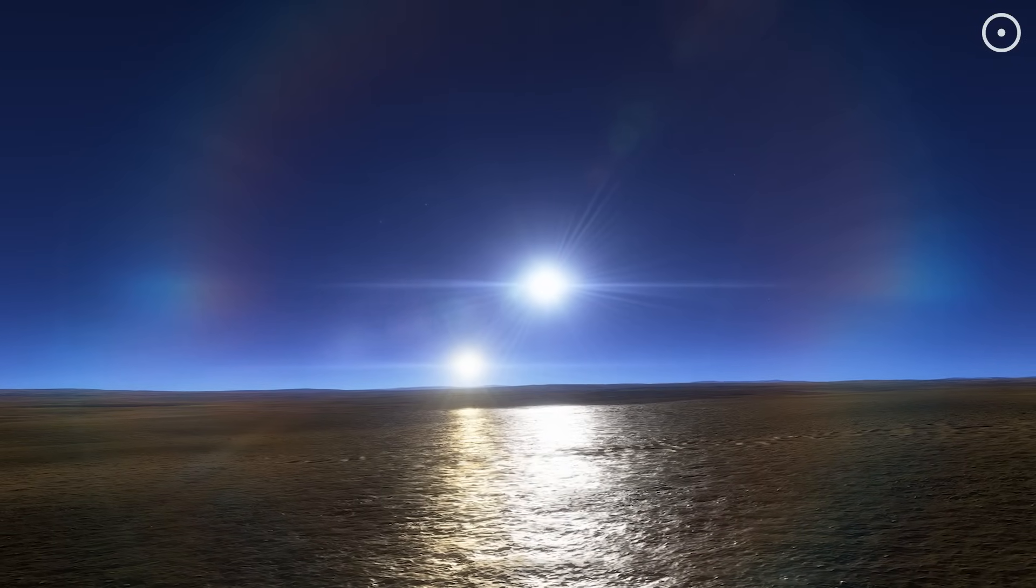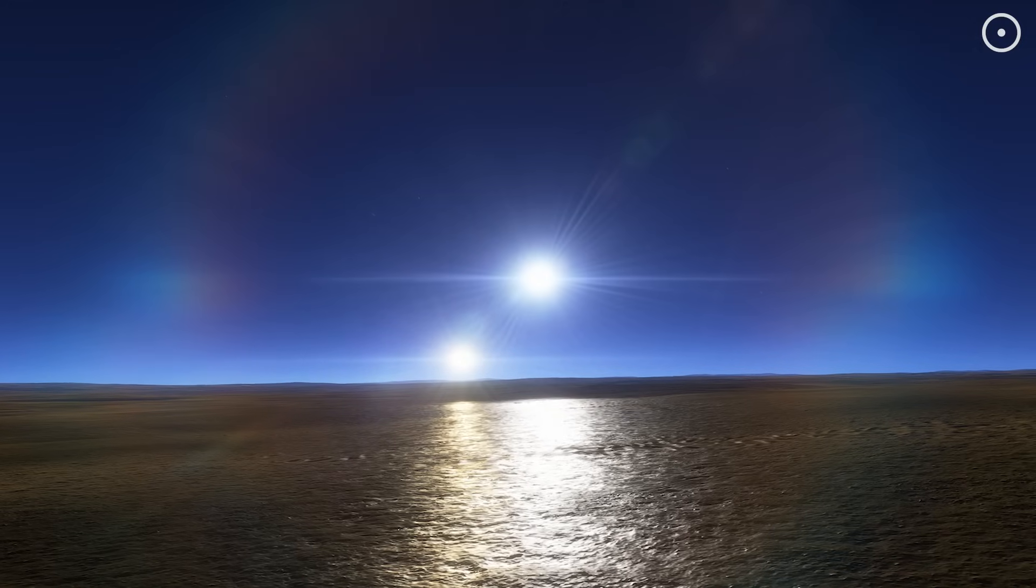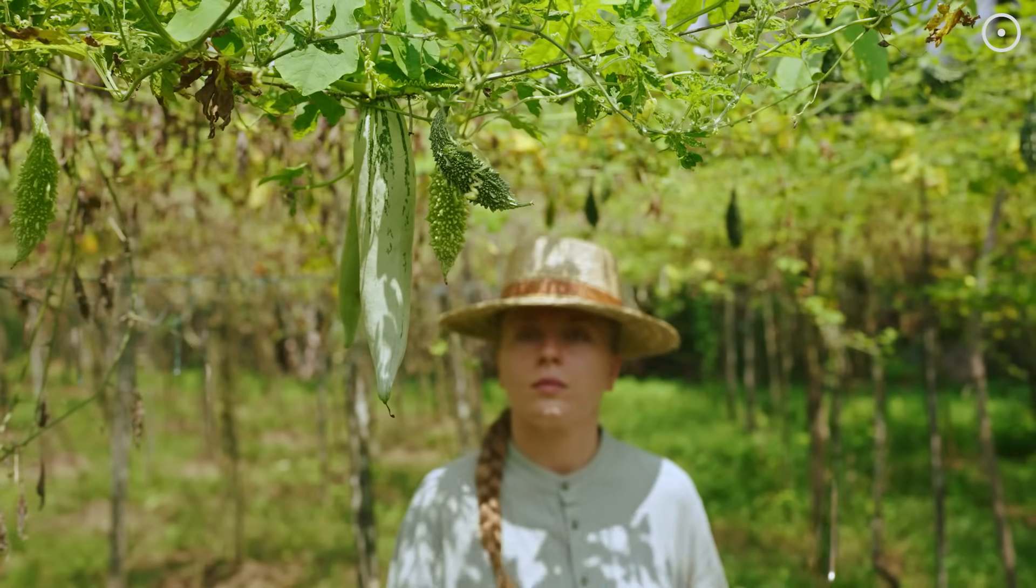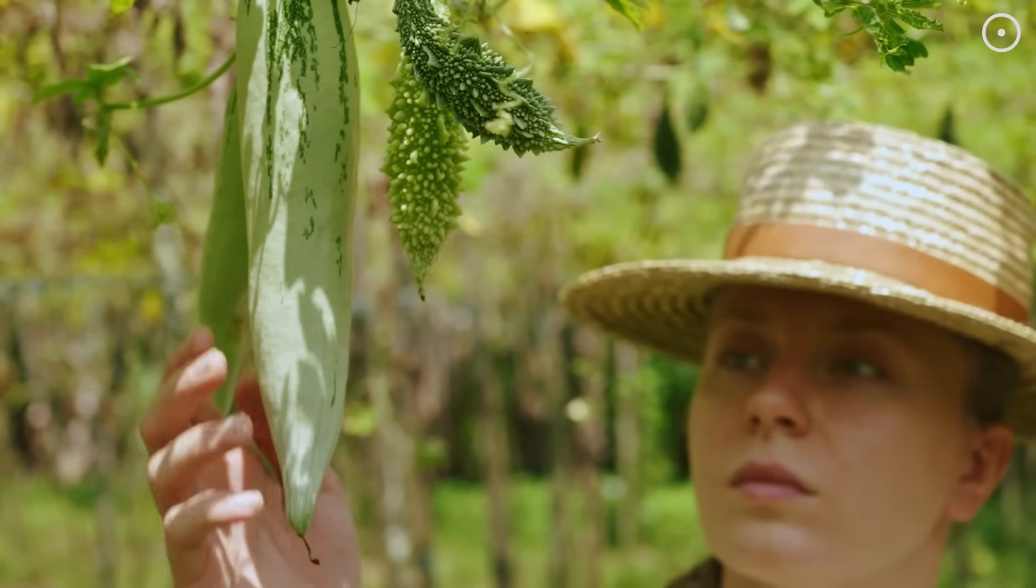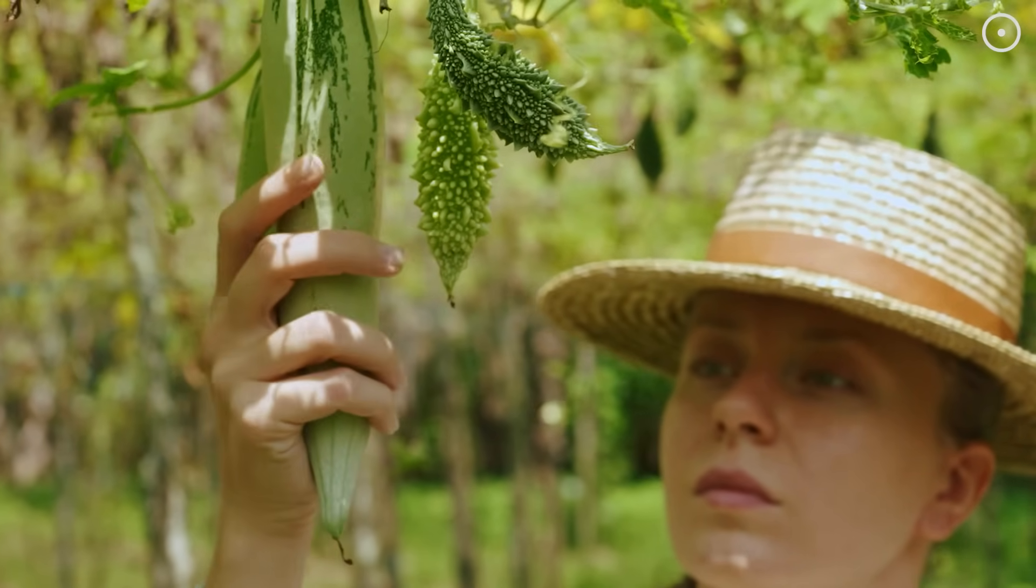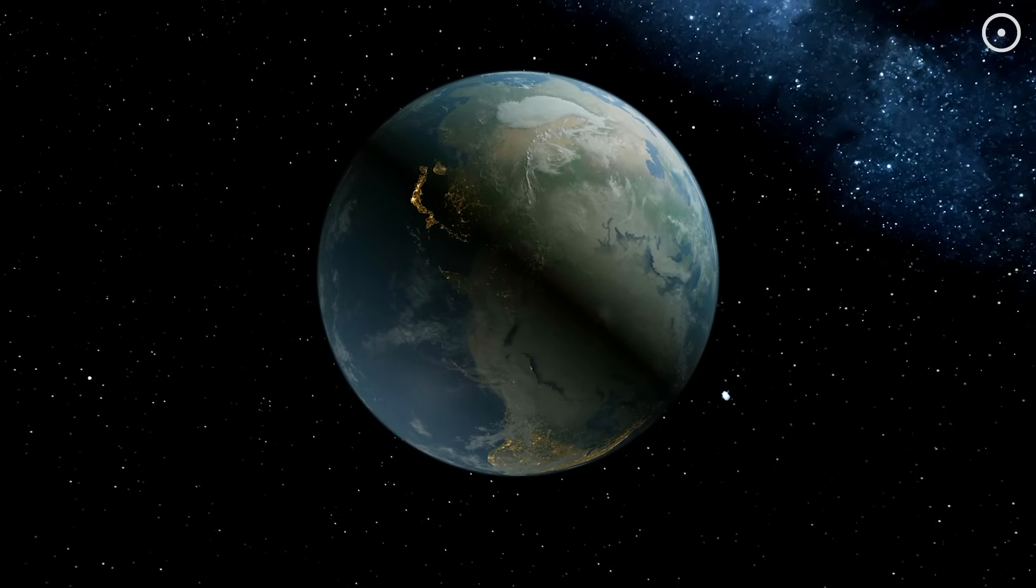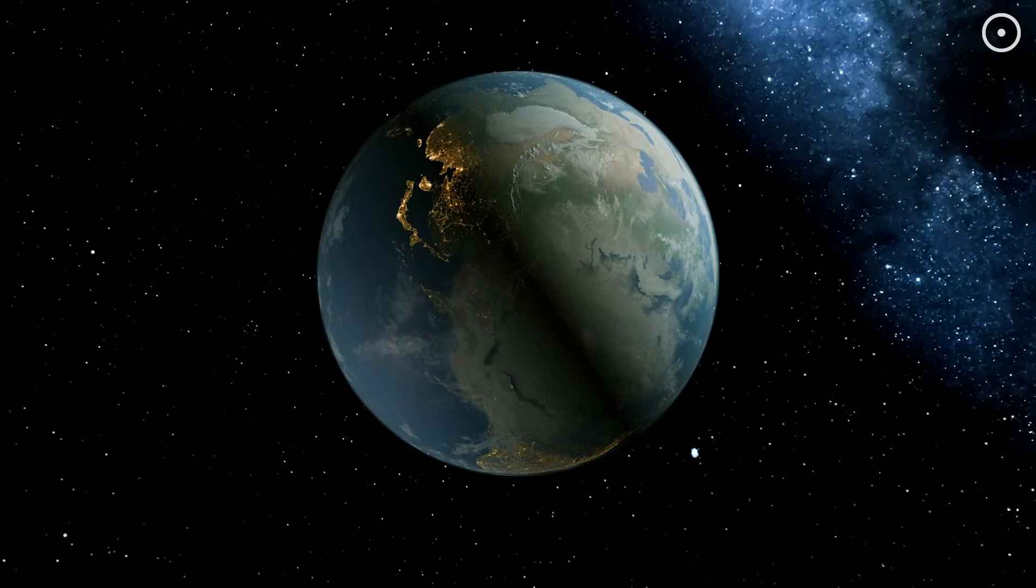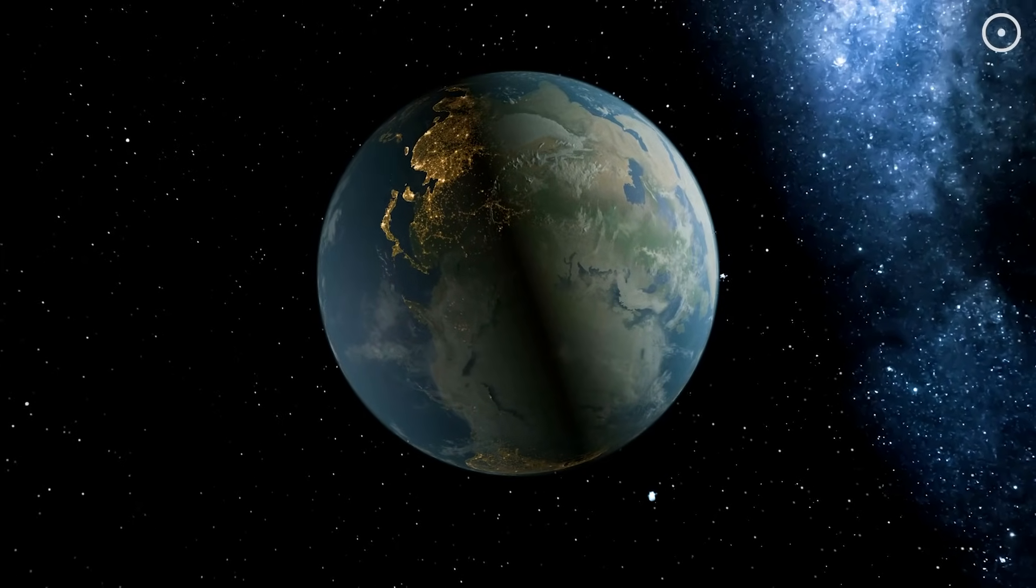Life on a two-sun Earth would have evolved very differently. Plants would have developed completely different types of photosynthesis to handle varying light conditions. Some might track both suns across the sky, while others might specialize in using light from just one sun.